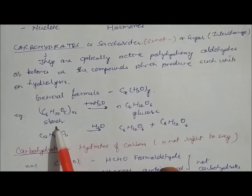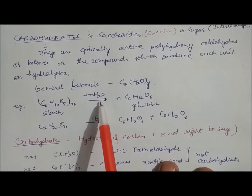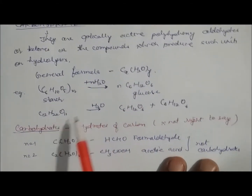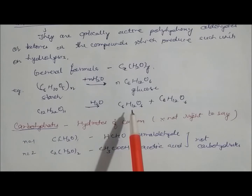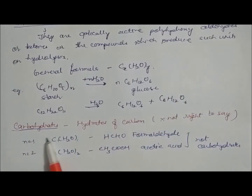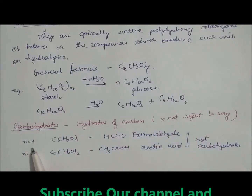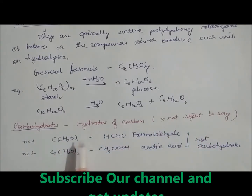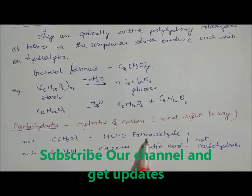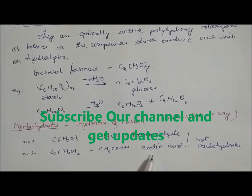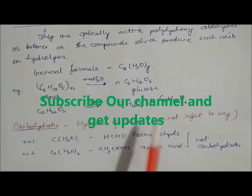Sucrose on hydrolysis converts into glucose plus fructose. Carbohydrates are not necessarily called hydrates of carbon, even though the formula looks like it. If you take n=1, the formula gives formaldehyde, which is not a carbohydrate. If n=2, you get C₂H₄O₂, which is acetic acid — also not a carbohydrate.